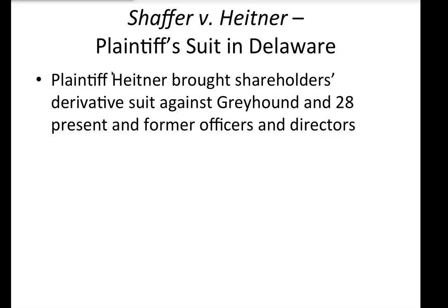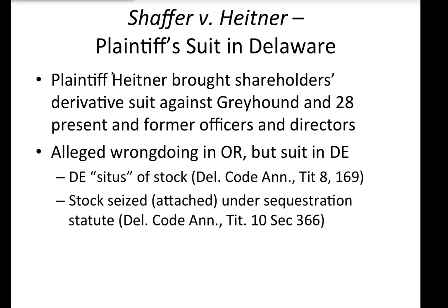He brought that lawsuit in Delaware, and notably none of these officers and directors were domiciled there — they were all elsewhere. In fact, the wrongdoing they were alleged to have committed occurred in Oregon. So why could he bring suit in Delaware? He contended that certain Delaware statutes gave the courts there jurisdiction. All of these officers and directors held stock in the Greyhound Corporation, and there was a Delaware statute — Title 8, Section 169 — that made Delaware the situs of that stock, meaning the stock in Greyhound is located in Delaware regardless of where the stock certificates or the stockholder might be.